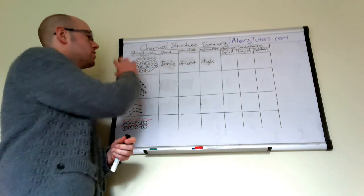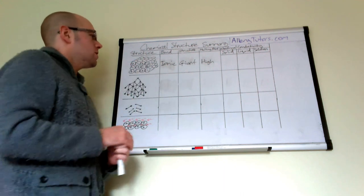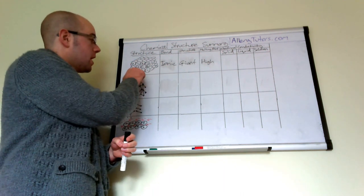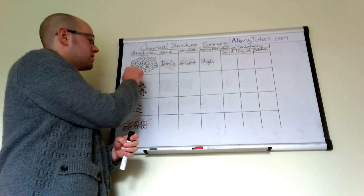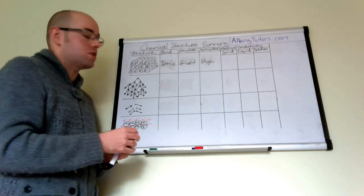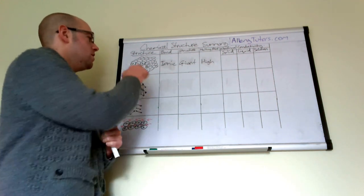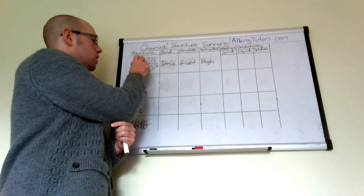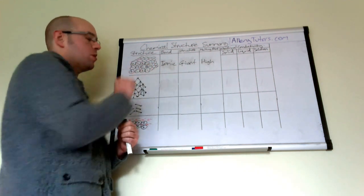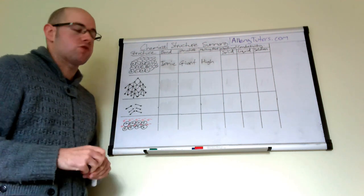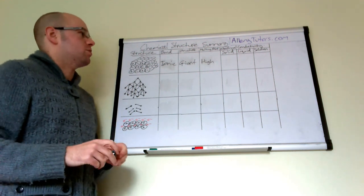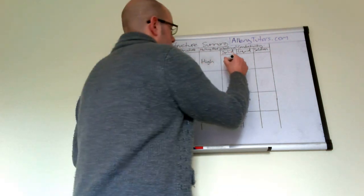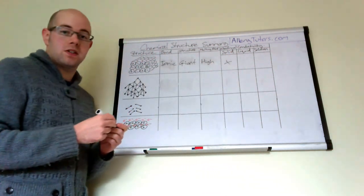The reason why they are strong is because each positive ion is surrounded by six negative ions — that's a lot of electrostatic attraction to break. You've got one, two, three, one below which is four, one in front which is five, and one behind which is six. So it's very, very strong and very difficult to break down.